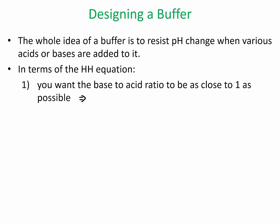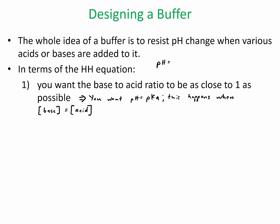What this is saying is you want the base-acid ratio to be as close to 1 as possible. So what you want is pH to equal pKa of the acid-base pair. This happens when the concentration of base equals the concentration of acid on your conjugate pair. Let's say we have pH equals pKa plus log of base over acid. So if base is 1 molar and acid is 1 molar, you end up taking the log of 1, which is 0.